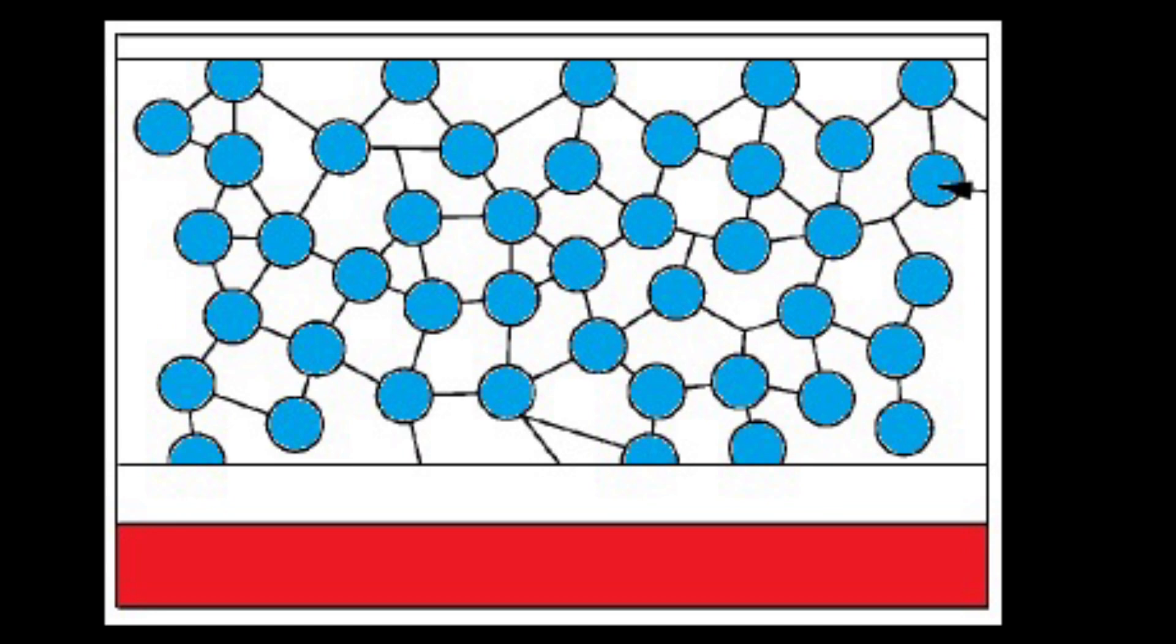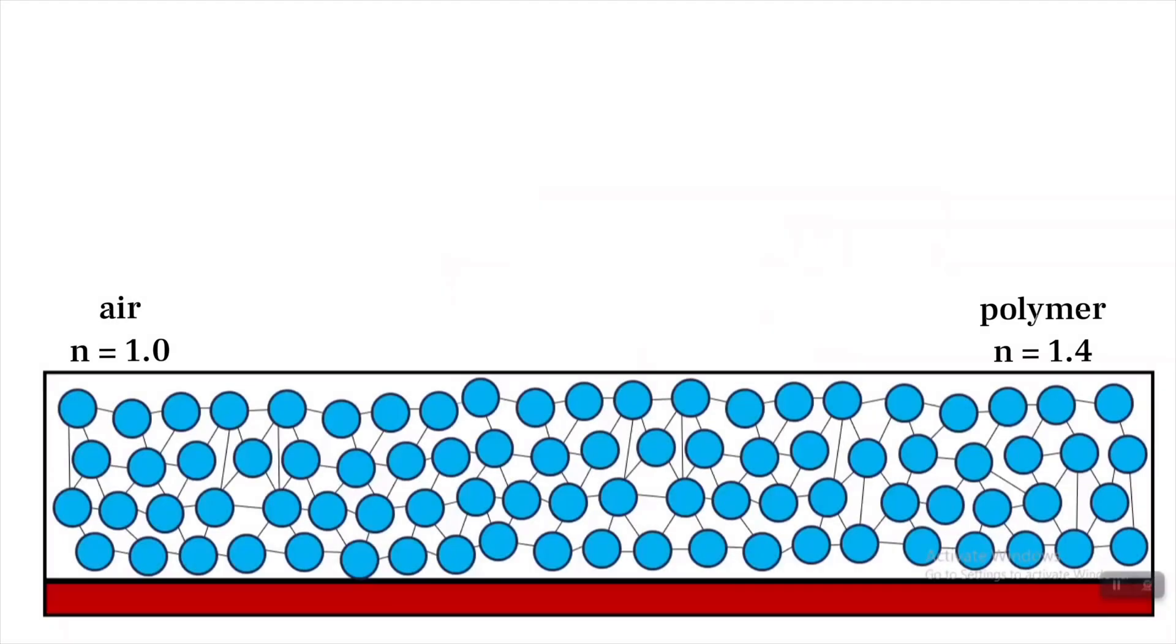This is because the polymer is porous with a lot of air pockets, and the index of refraction of the polymer and the air is different enough that light gets scattered before it can reflect off the colored surface.